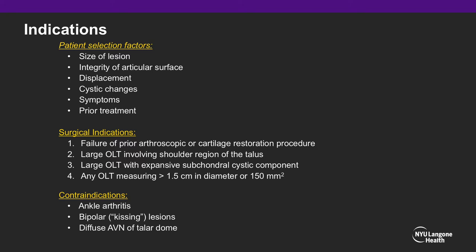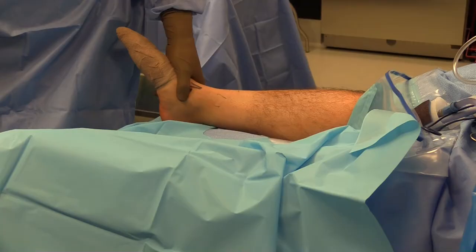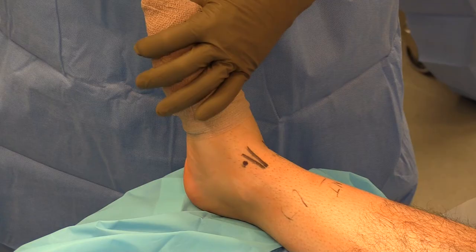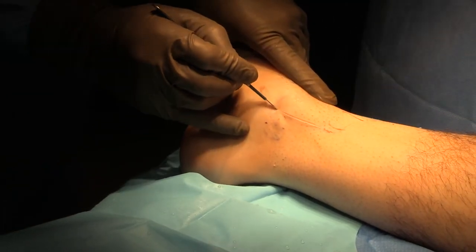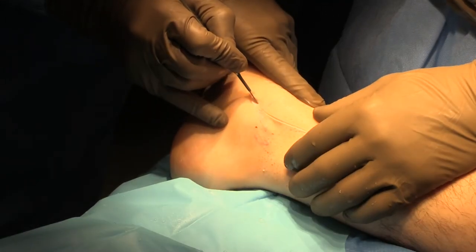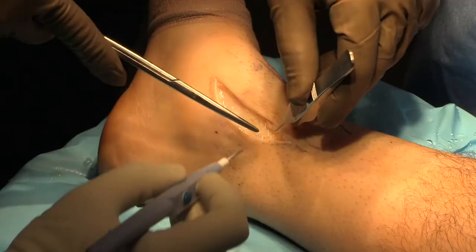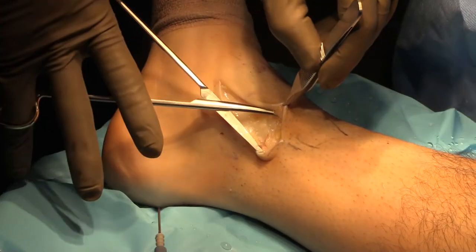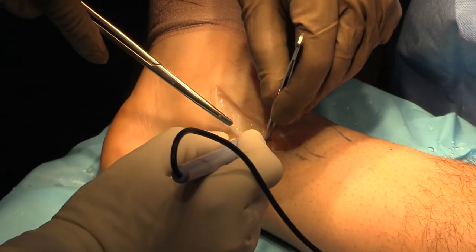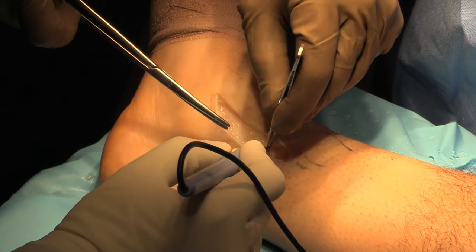Contraindications for the surgery include diffuse osteochondral changes or arthrosis, bipolar kissing lesions, or AVN of the talar dome. The patient is positioned supine. Staging arthroscopy may be performed, if desired, to evaluate the lesion or address additional pathology. A curvilinear incision is planned, starting 3 to 4 inches proximal to the tip of the medial malleolus.